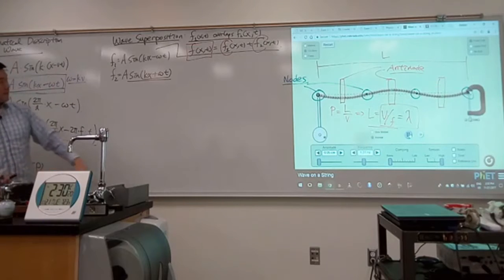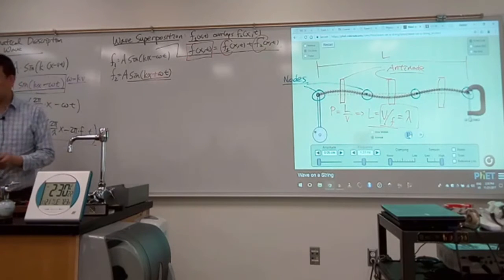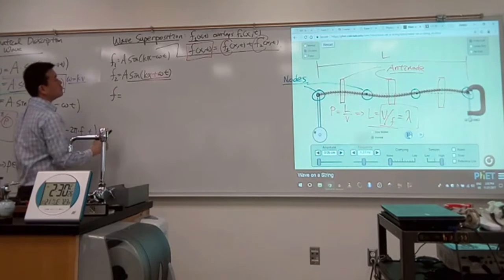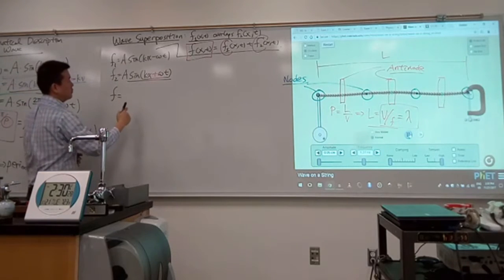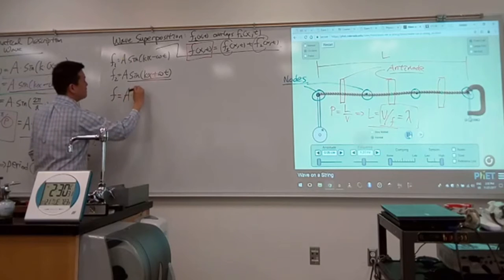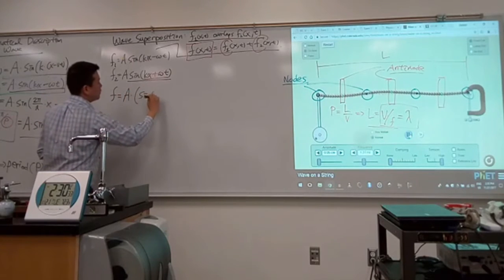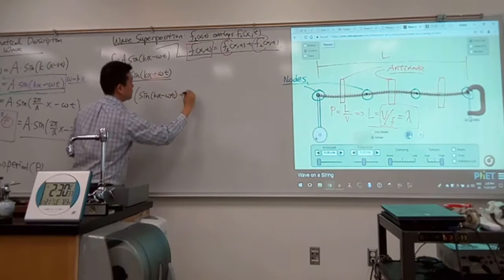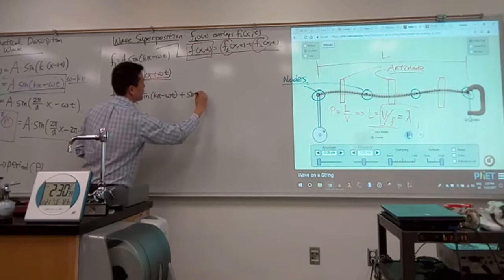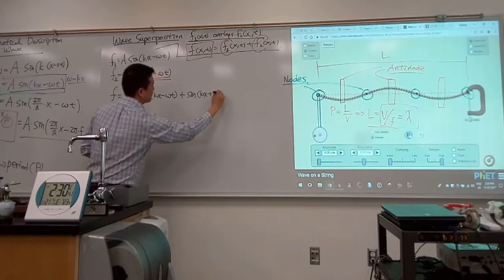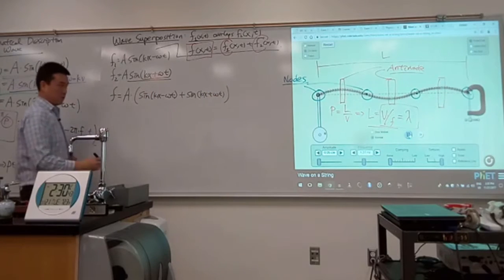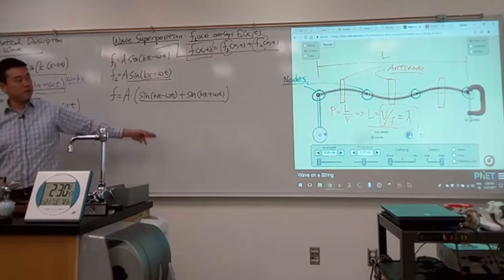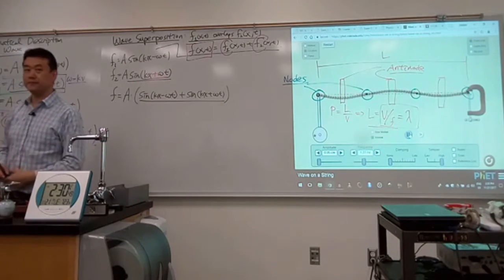So let's write down what f is using wave superposition. f is equal to this plus this. So I can factor out a, a times sine of kx minus omega t plus sine of kx plus omega t. So you look at this expression and think this does represent what I see on the screen there.